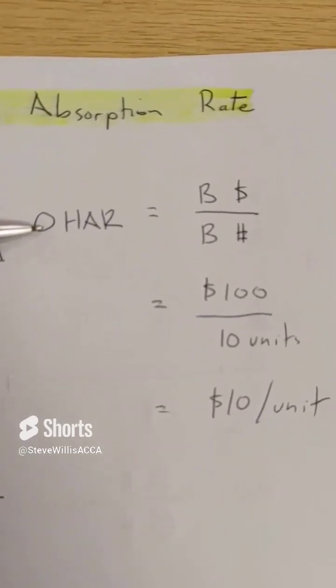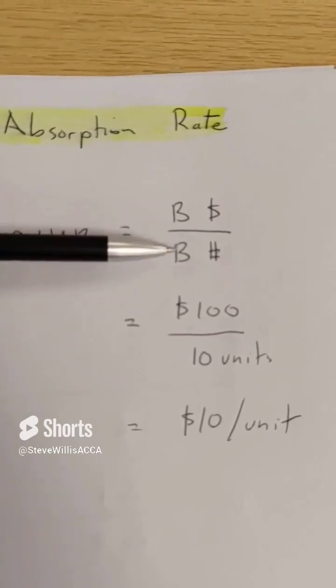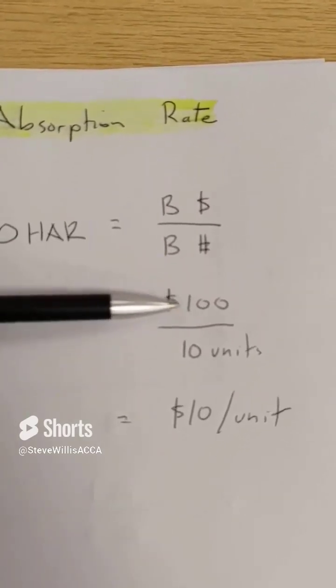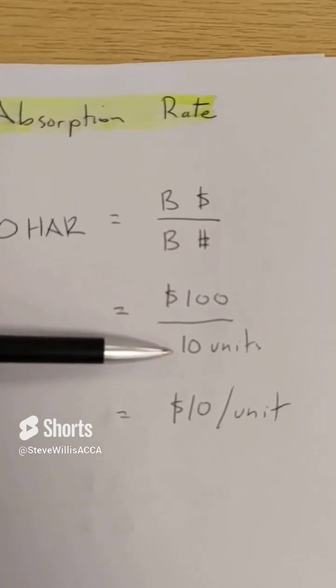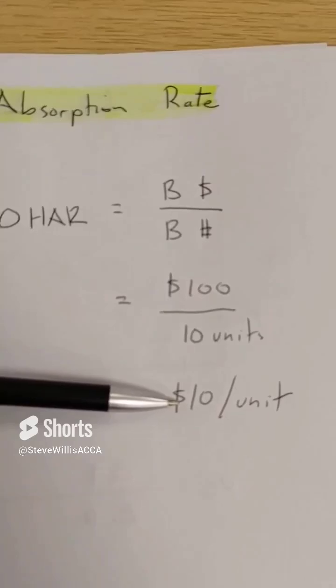Overhead absorption rate is a mechanism to help me understand the overhead cost per unit. That would be the budgeted overheads divided by the budgeted activity: $100 divided by 10 units equals $10 per unit.